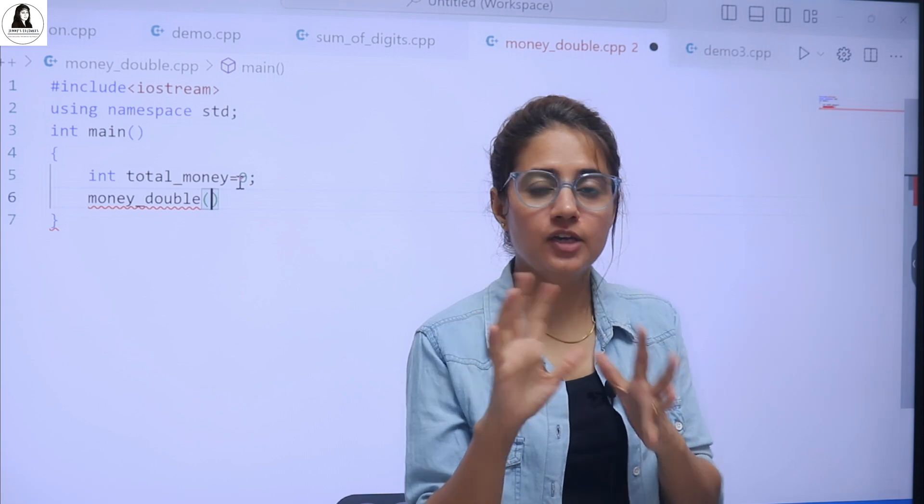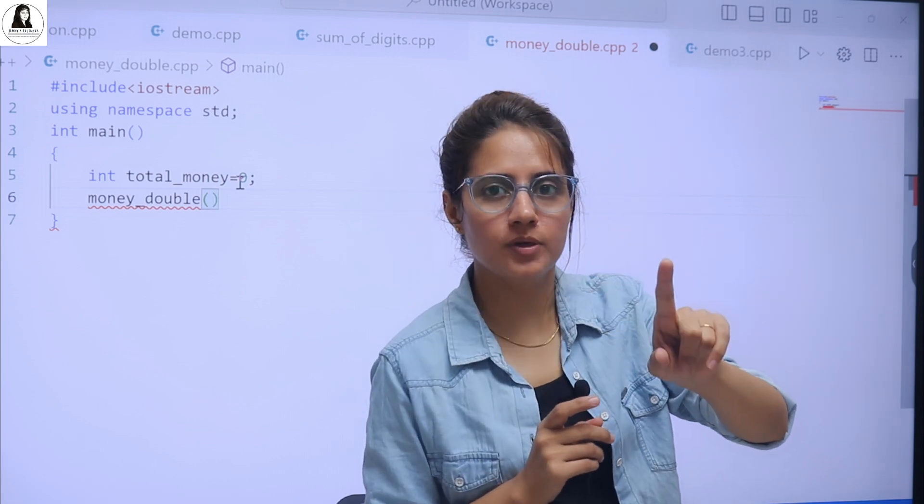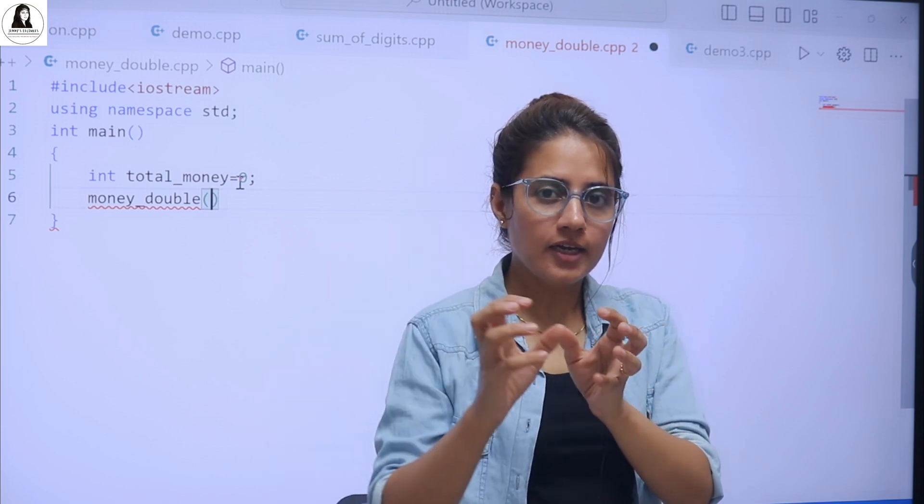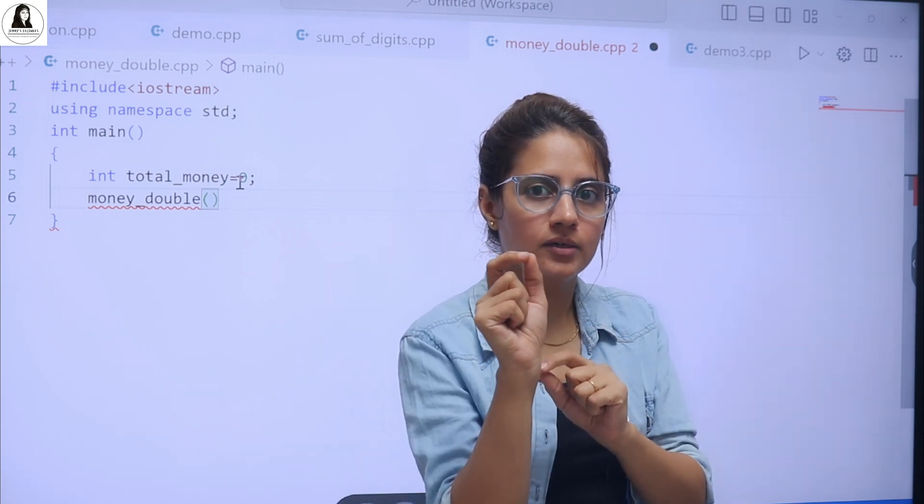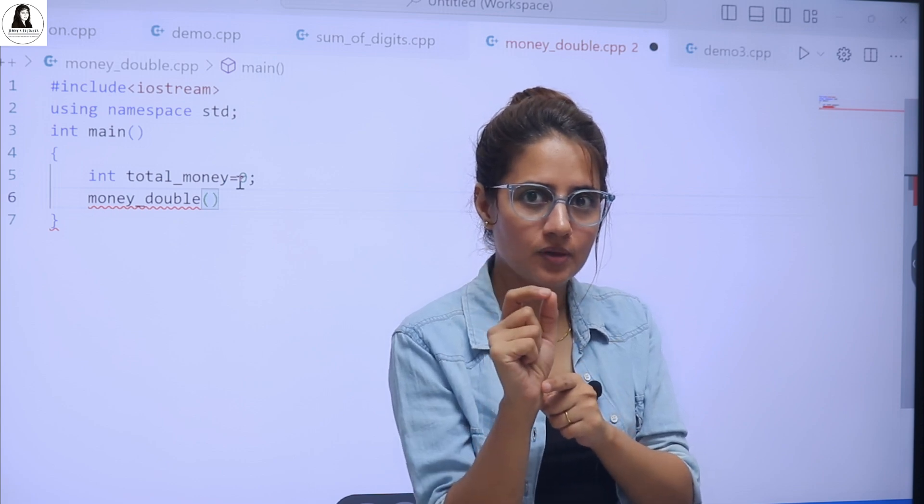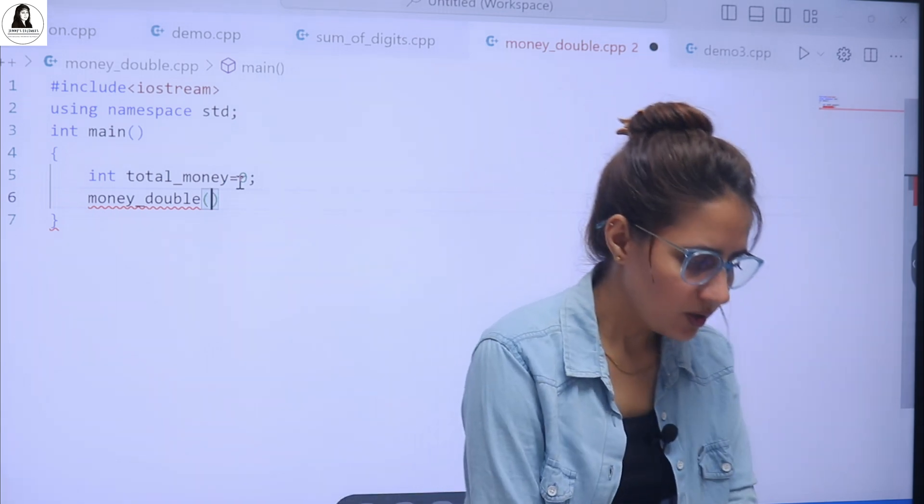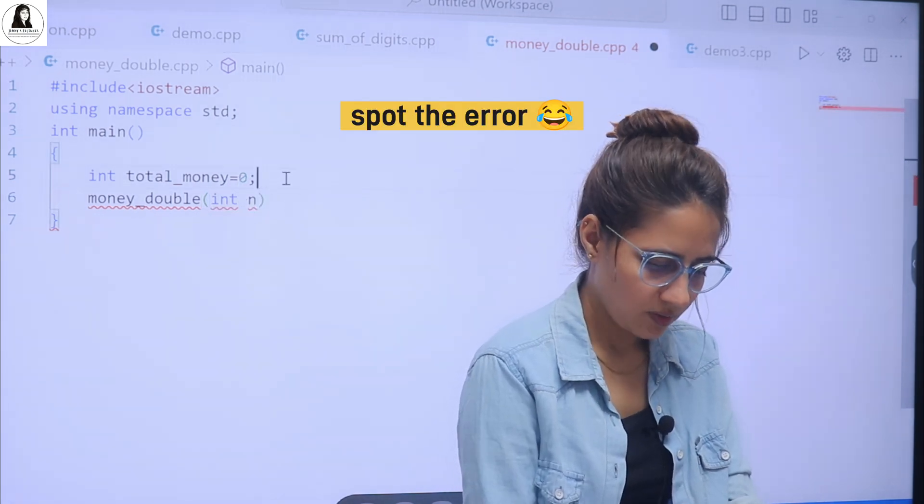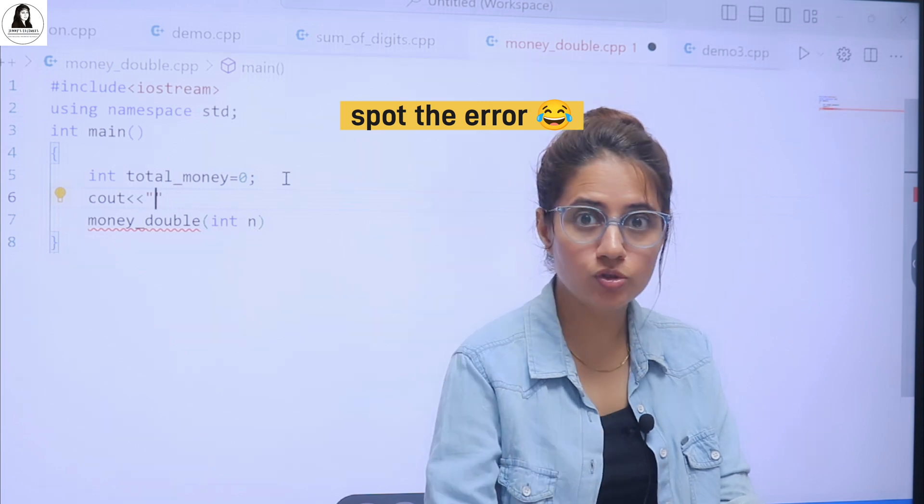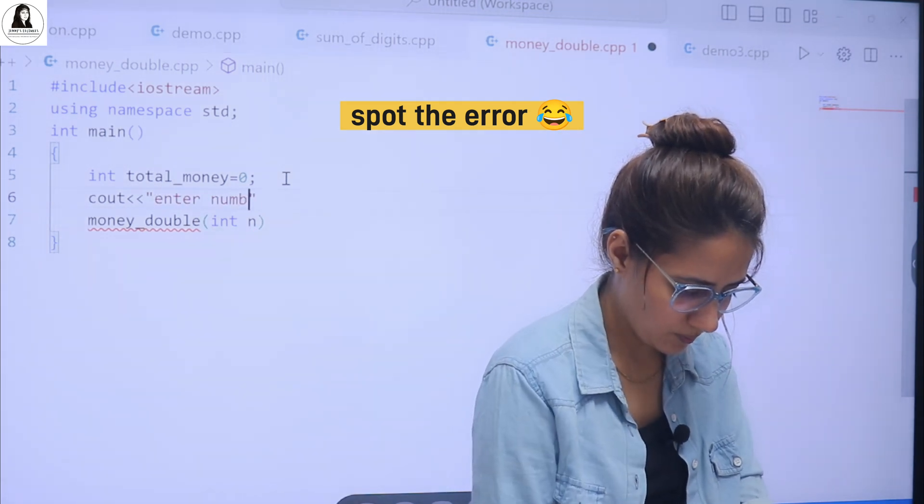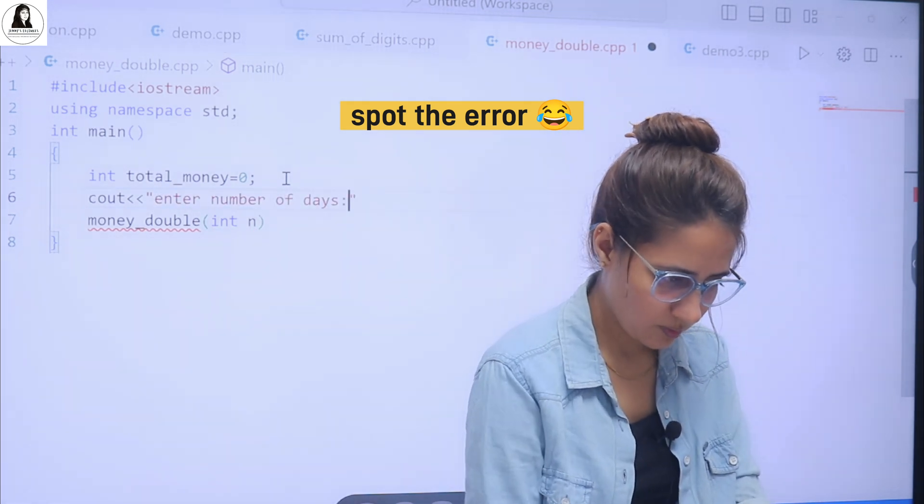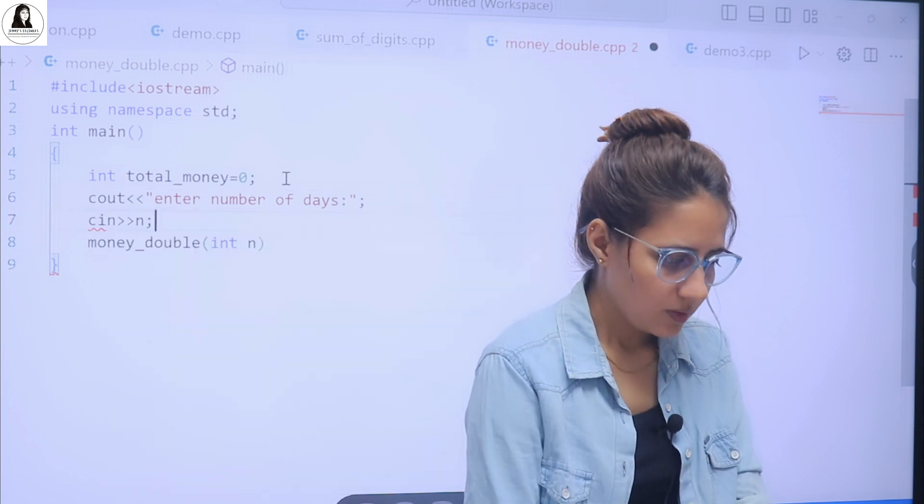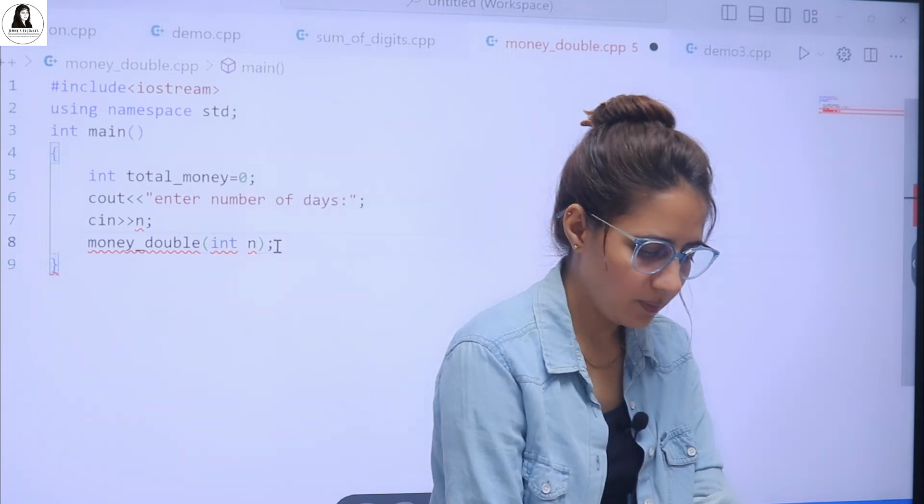That is why no need to pass the money. If suppose I say at day 1, you have 10 rupees and for 15 days, you have to double, like 10 rupees at day 2, it will become 20. Right. In that case, you have to pass in this function the money you have at 1 day, I mean, first day. But here we have only 1 rupee. So no need to pass that thing. So money double here, simply we are passing int n. Int n means number of days. Right. So let's please, you know, ask from the user to enter number of days.